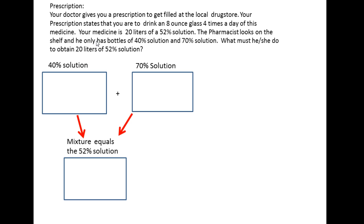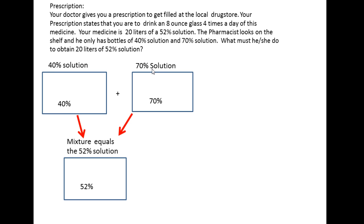As stated in the problem, the pharmacist only has bottles of 40 percent solution and 70 percent solution, so he has to mix them together. The question is: how much of each solution does he mix together to get a 52 percent solution? At the bottom of the boxes we label: the 40 percent solution box has 40 percent, the 70 percent solution box has 70 percent, and our mixture is to be 52 percent.